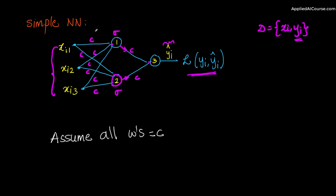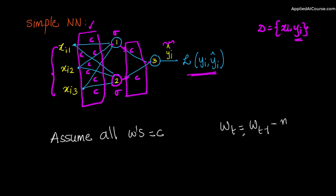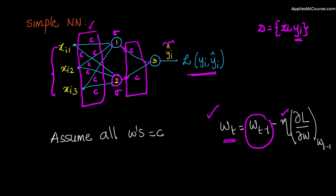How do these weights get updated? Using simple SGD, any weight at iteration t equals the weight at iteration t-1 minus the learning rate times the partial derivative of the loss with respect to that weight at t-1. There are other variations where the learning rate changes over time and is per-weight dependent, but I'm taking the simplest case here.